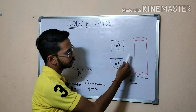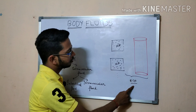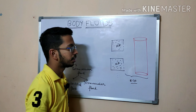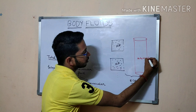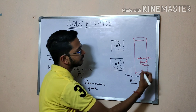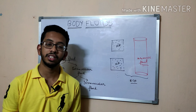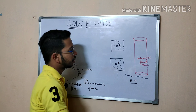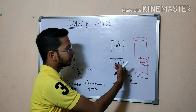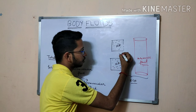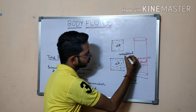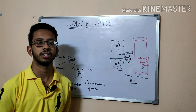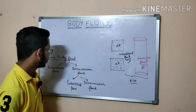The extracellular fluid is not present in only one compartment — it is divided into two compartments. The compartment inside the vessel is known as intravascular fluid, which is essentially the blood. The compartment outside the vessels but between the cells is called interstitial fluid. Together, interstitial fluid and intravascular fluid comprise the extracellular fluid.